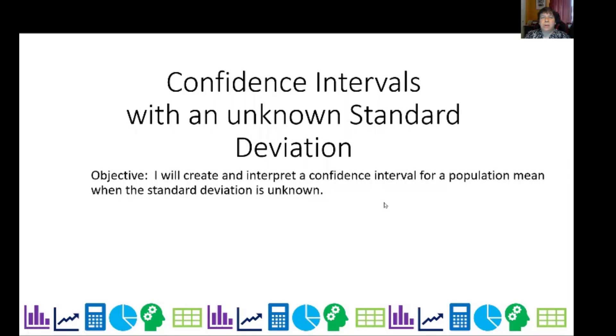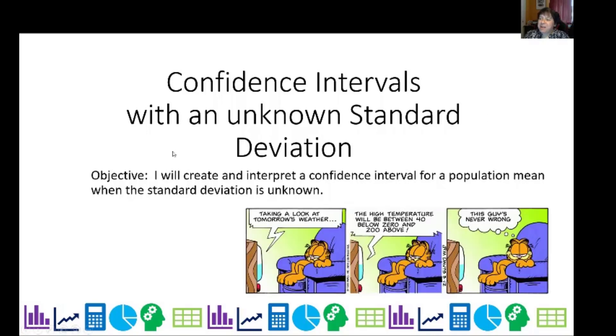Now we're going to look at confidence intervals with an unknown population standard deviation. But before we do that, a little bit of Garfield. Taking a look at tomorrow's weather, the high temperature will be between 40 below 0 and 200 above. And he says, this guy's never wrong. Yeah, that's because he's used a 100% confidence interval, which we won't be doing because that's not very helpful.